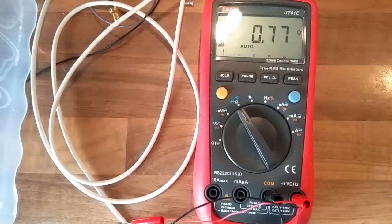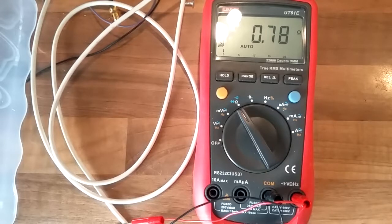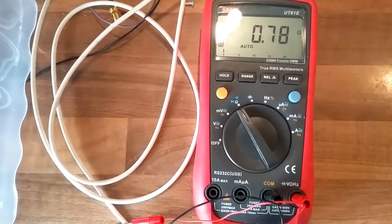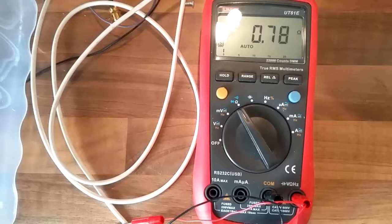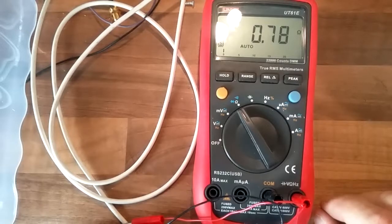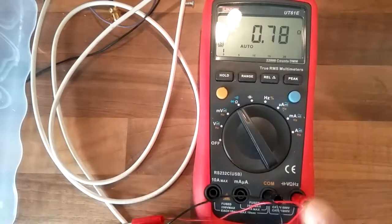0.77 ohms. Excuse me, bit of a frog in my throat there. 0.77 ohms—not too far off the 0.68 the dummy load was giving us. Now this is what's called a two-point measurement.